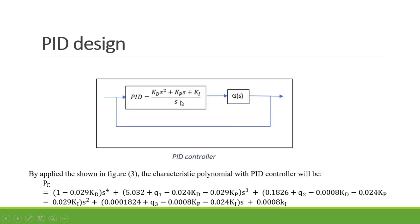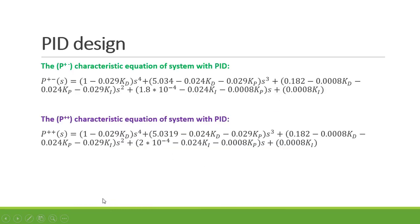Using the design of a BID controller, we can write the closed-loop system and find the characteristic equation by multiplying (KD·s² + KP·s + KI) by the numerator of G(s), plus s multiplied by the denominator of G(s). We obtain this characteristic equation to design a BID controller for the resulting fourth-order system.